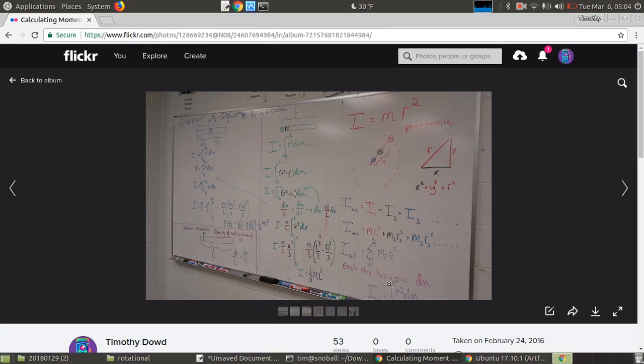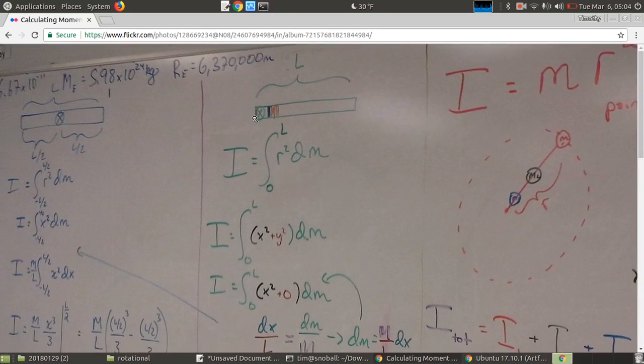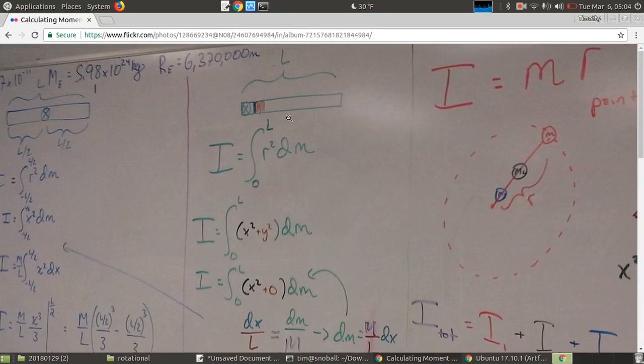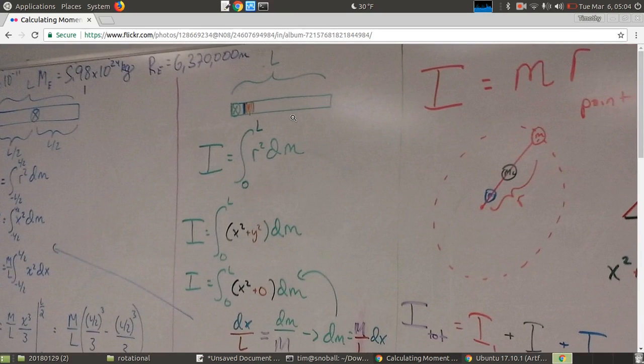Now we're dealing with things that are infinitely thin. That's an integral. So mr squared becomes dm r squared. And it's usually written like this. So all we have to do is take the integral from zero, because we start on our axis of rotation, up to l, which is the length of the stick.